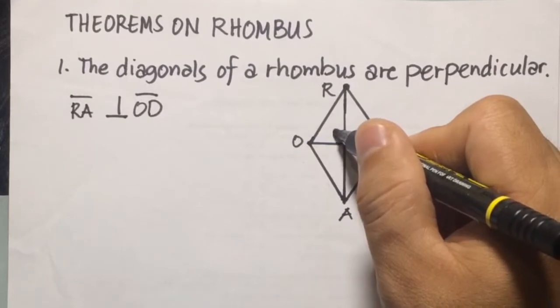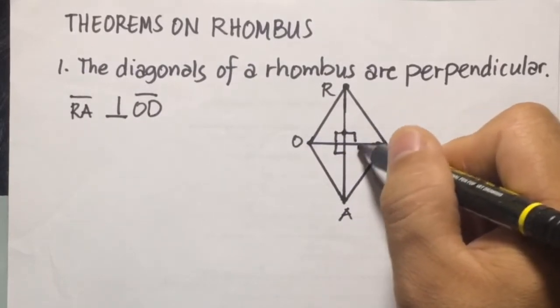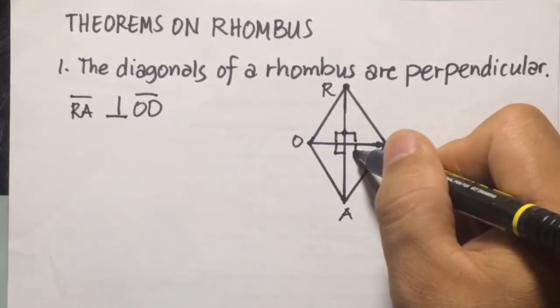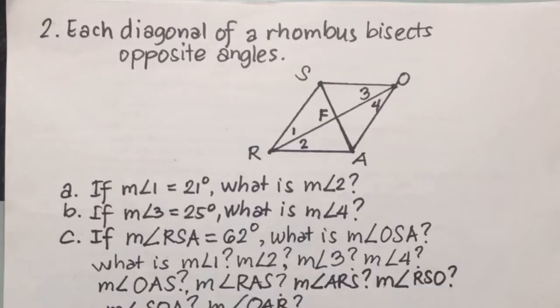So each of the four angles formed at the intersection is 90 degrees: this is 90, this is 90, this is 90 here, and this is also 90 degrees.